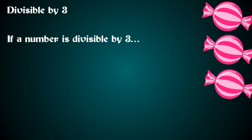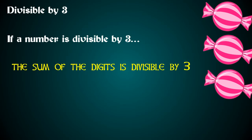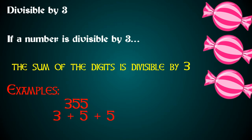What about numbers that are divisible by 3? If a number is divisible by 3, the sum of the digits is also divisible by 3. For example, take 355. If we add up the sum of the digits, 3 plus 5 plus 5, we get 13. But 13 is not divisible by 3, so 355 is not divisible by 3.